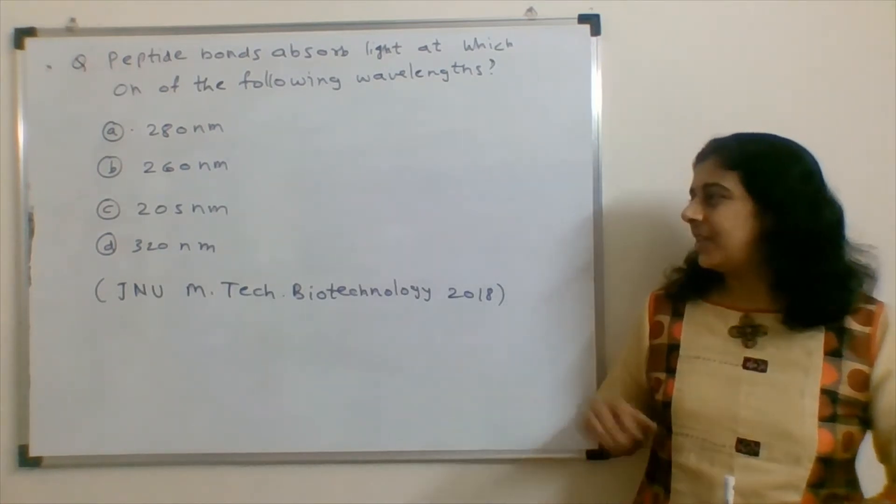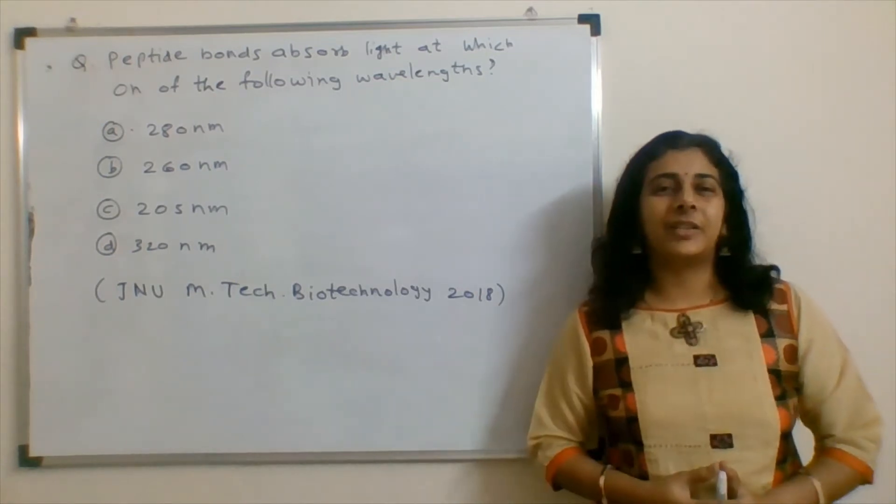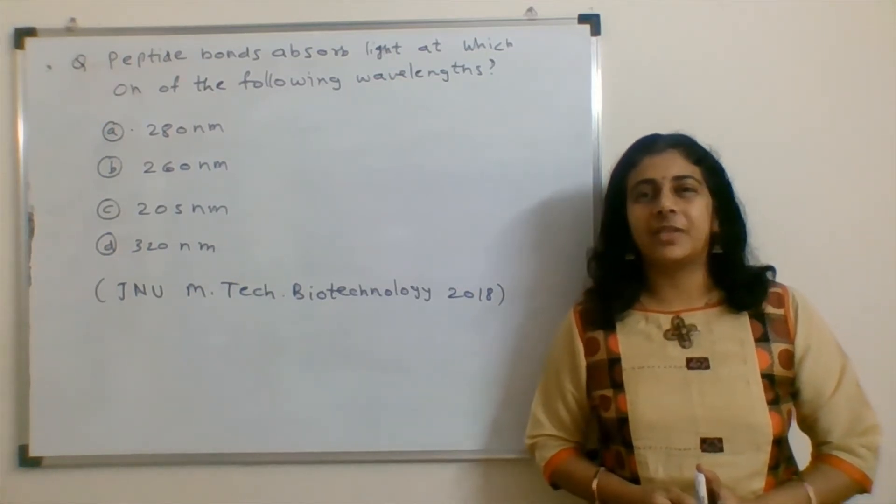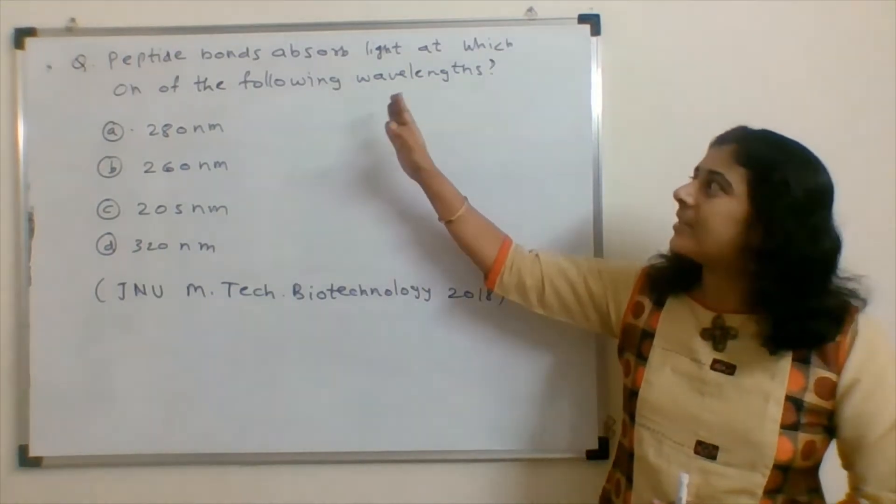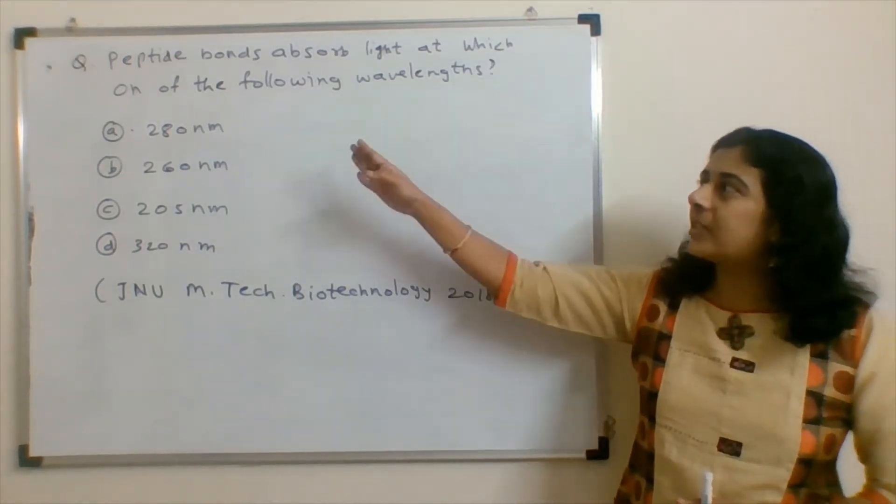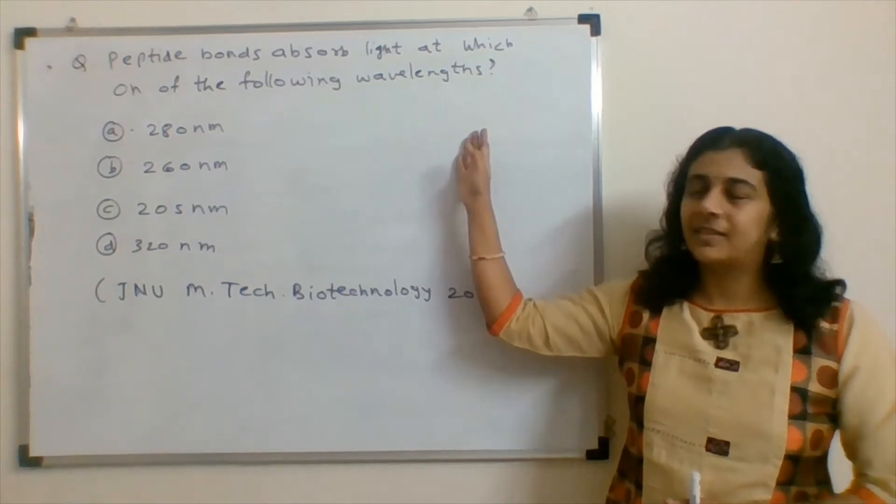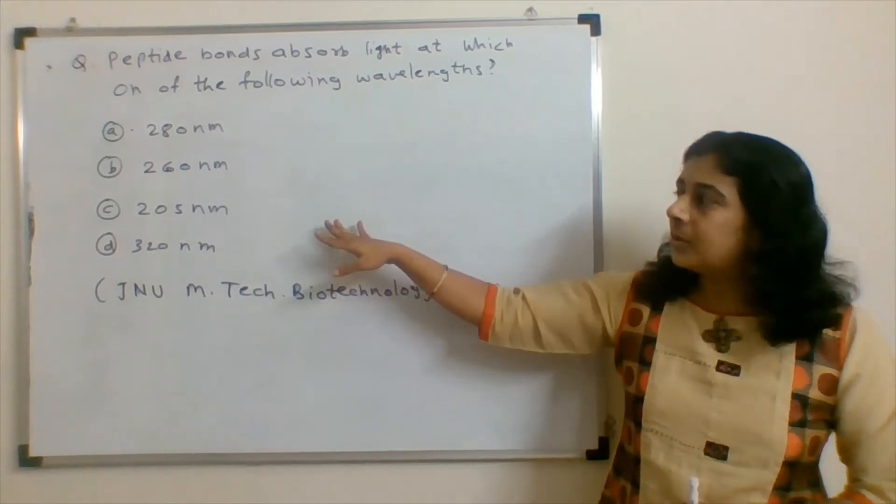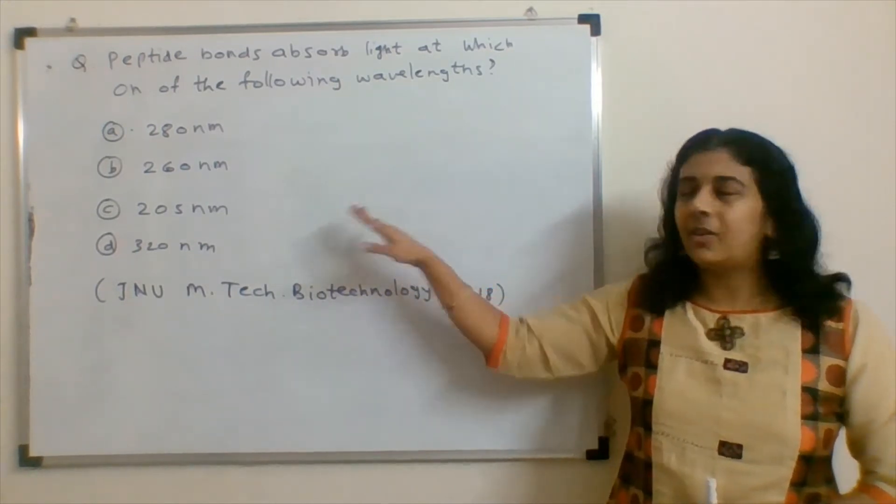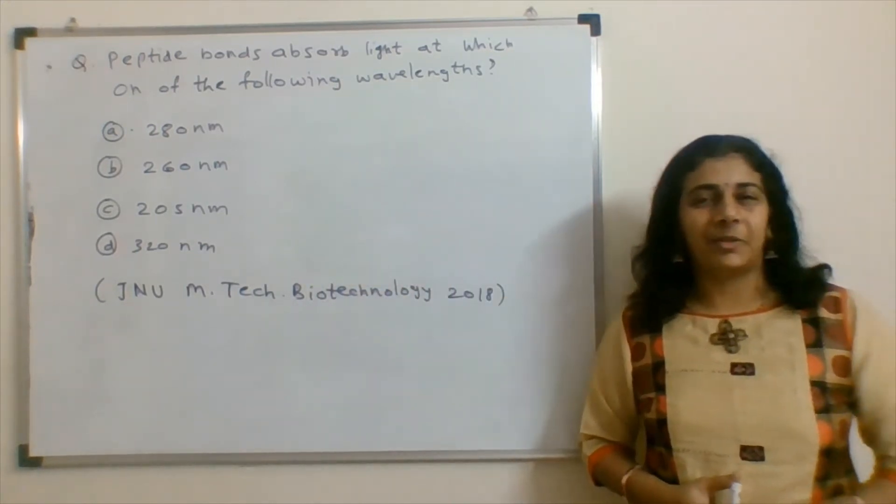The question for today's video is from JNU entrance for EmTech Biotechnology 2018. Peptide bonds absorb light at which one of the following wavelengths? The options are 280 nanometer, 260 nanometer, 205 nanometer or 320 nanometer.